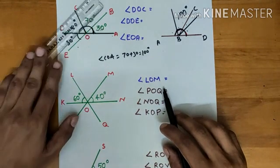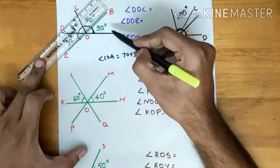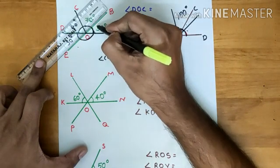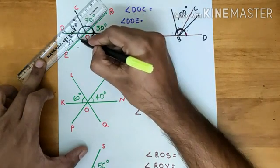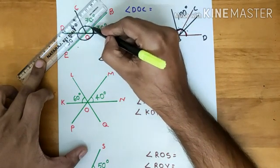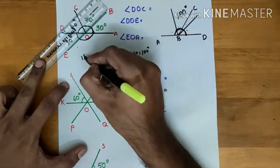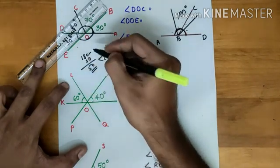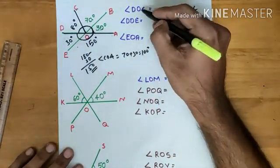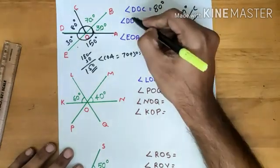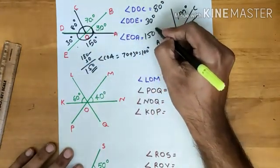If we consider just this line and this line, it is again a linear pair. Angle BOA is given as 30 degrees, so we can find the other angle by subtracting 30 from 180, which gives 150 degrees. So angle DOC is 80 degrees, opposite angle DOE is 30 degrees, and angle EOA is 150 degrees.